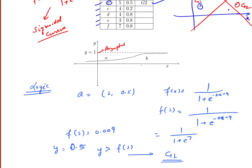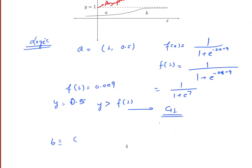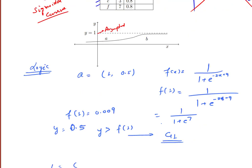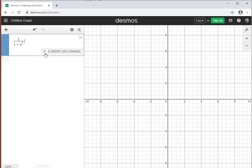For point B, the coordinates are (5, 0.5). So f(5) = 1 / (1 + e^(−2×5 + 9)) = 1 / (1 + e^(−10 + 9)) = 1 / (1 + e^(−1)). We will use Desmos again for the calculation.